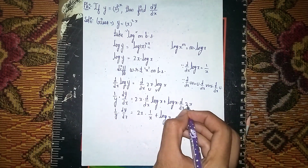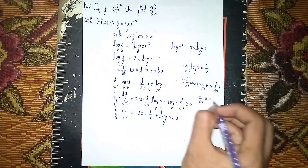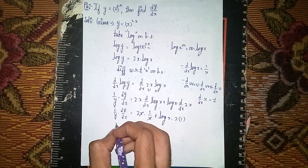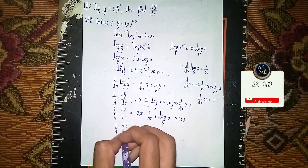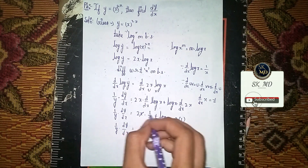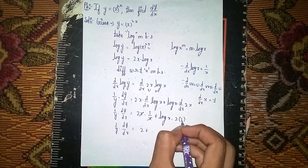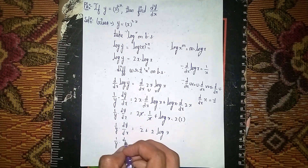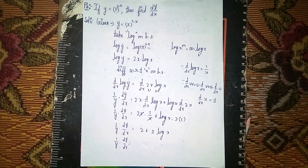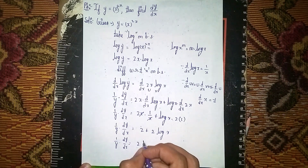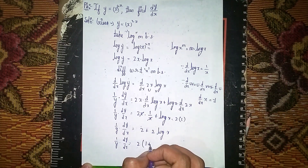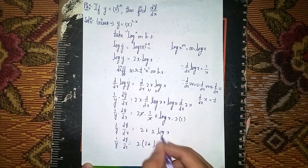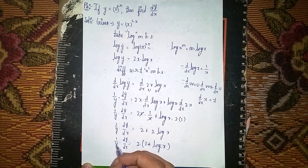The x in 2x and the x in 1/x cancel out, giving 2. So 1/y into dy/dx equals 2 plus 2 log x. We can factor out 2: it becomes 2 into (1 plus log x). Now multiply both sides by y to isolate dy/dx.